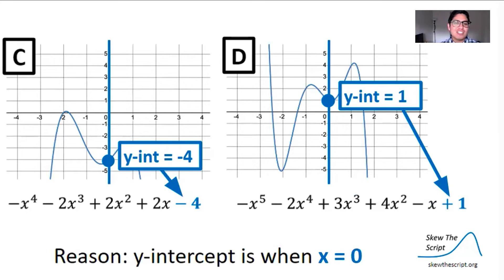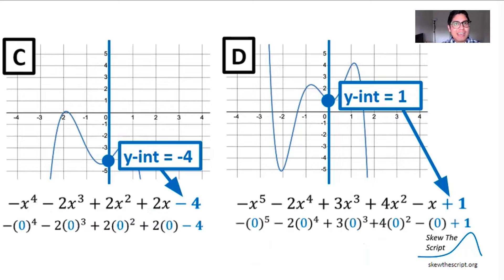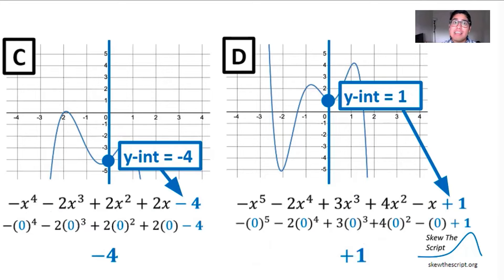It's not actually a coincidence. The y-intercept occurs when x equals zero. Imagine substituting zero for all of the x values — that's a lot of zeros, and everything goes away except the non-x term.